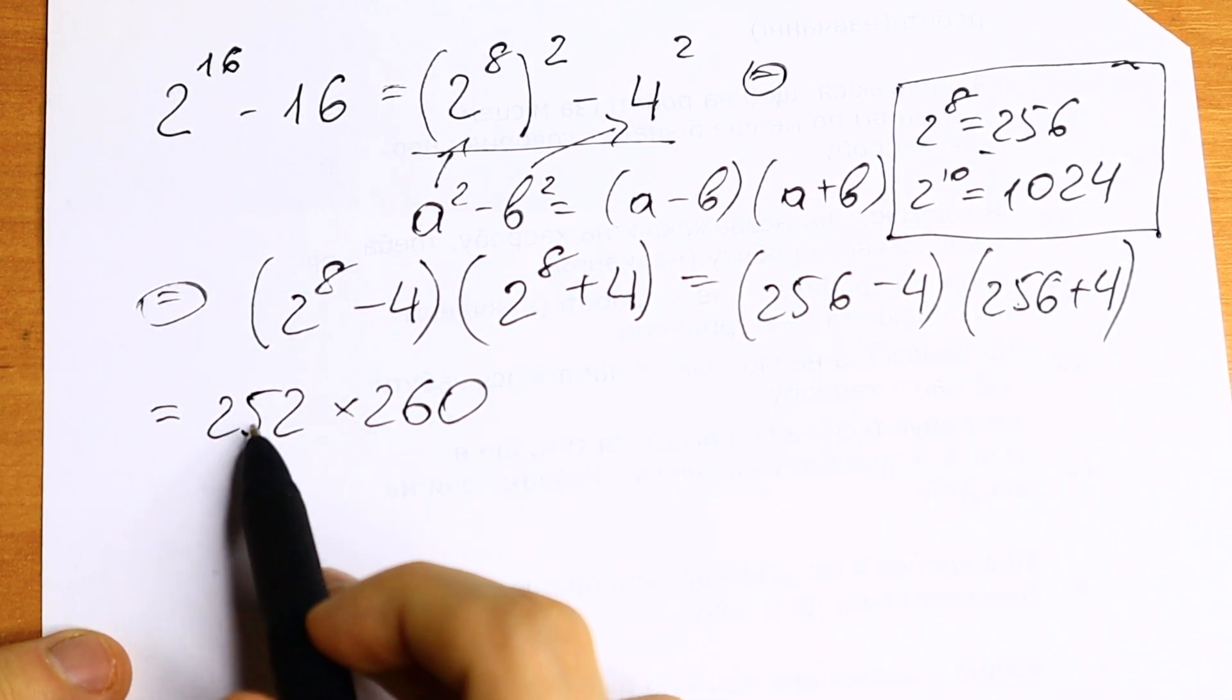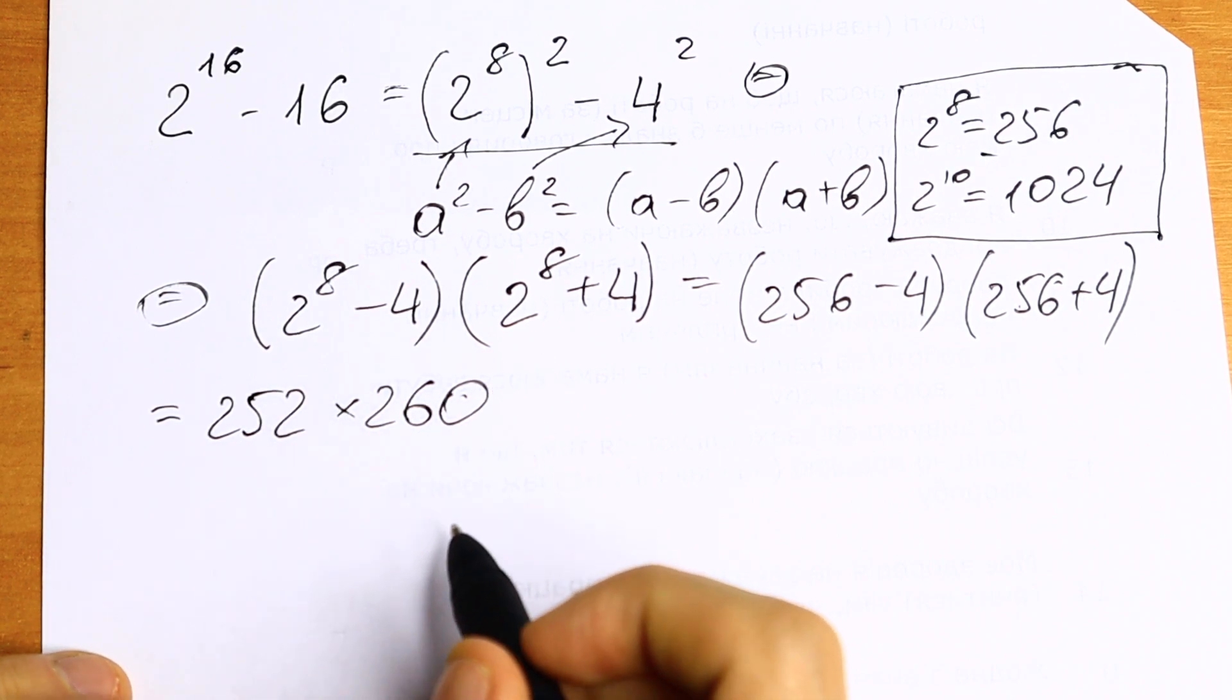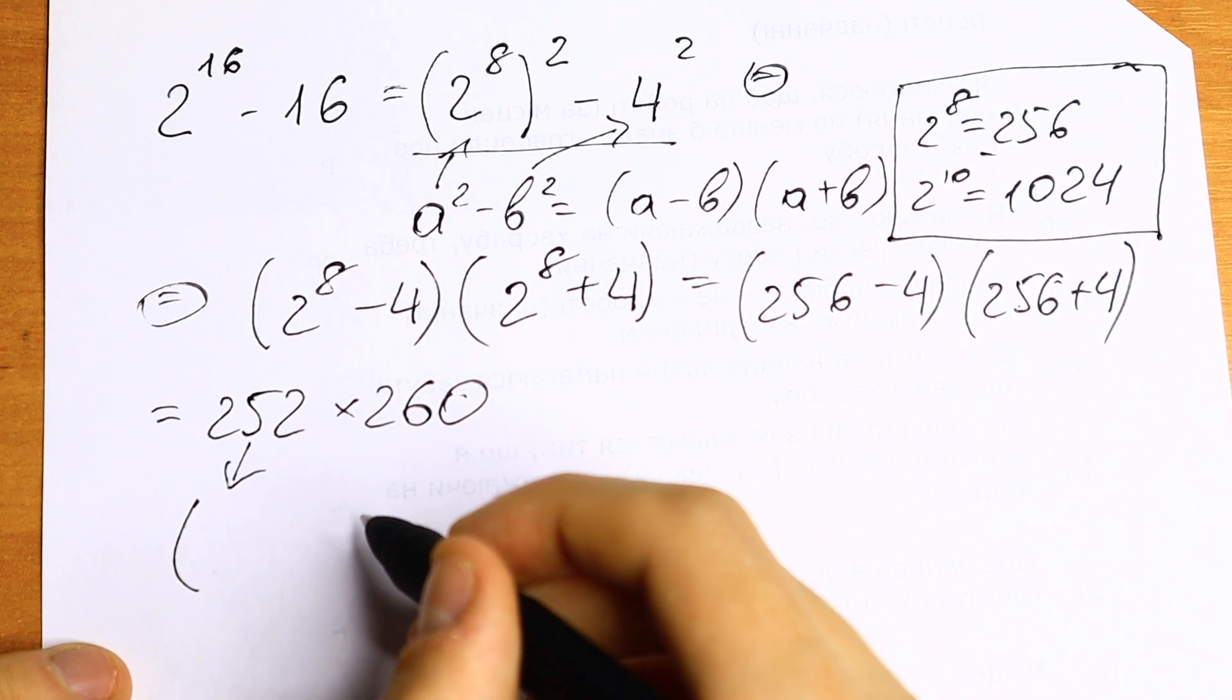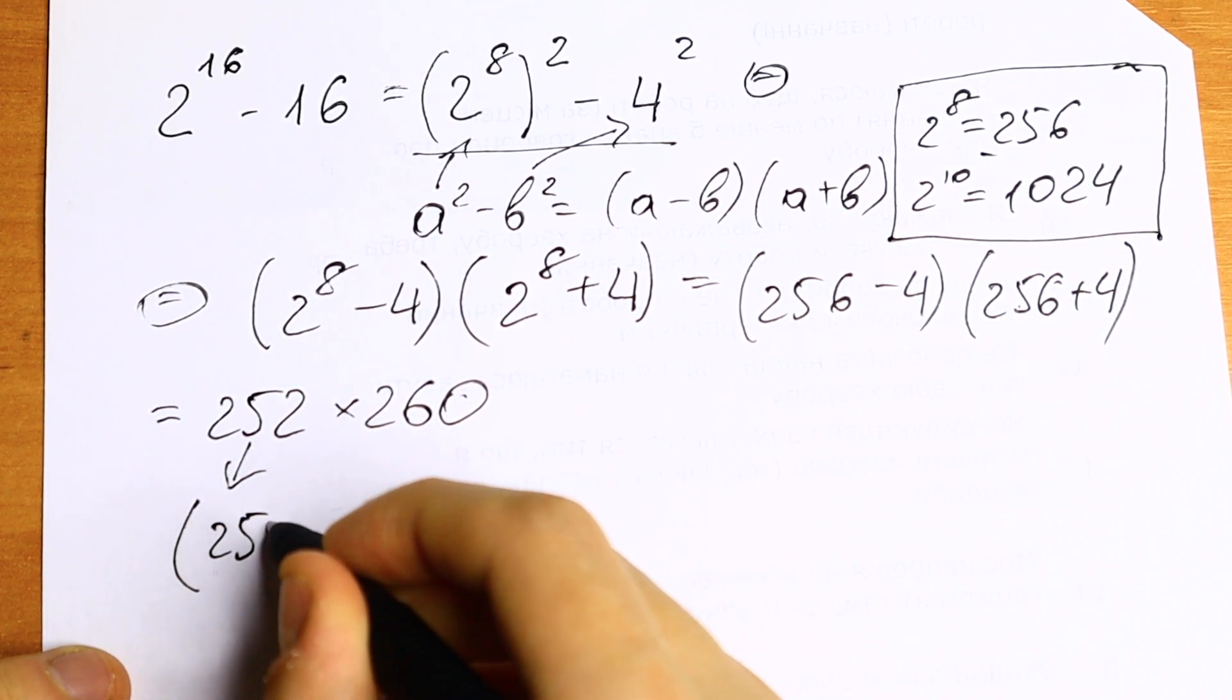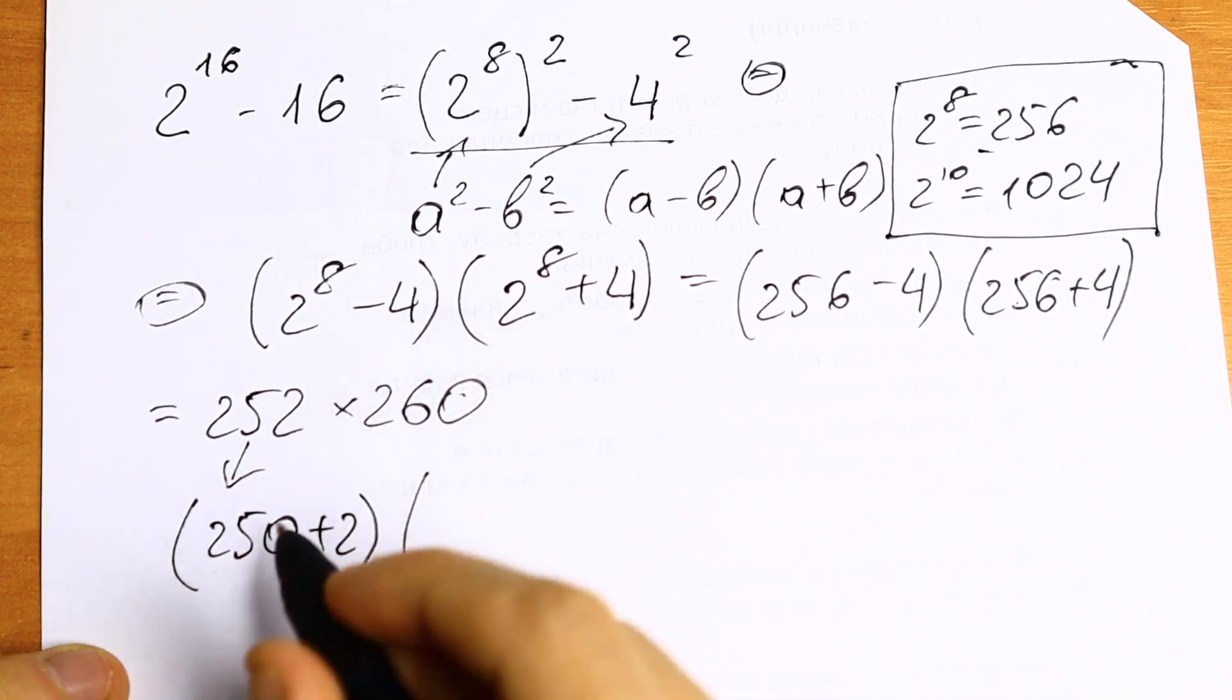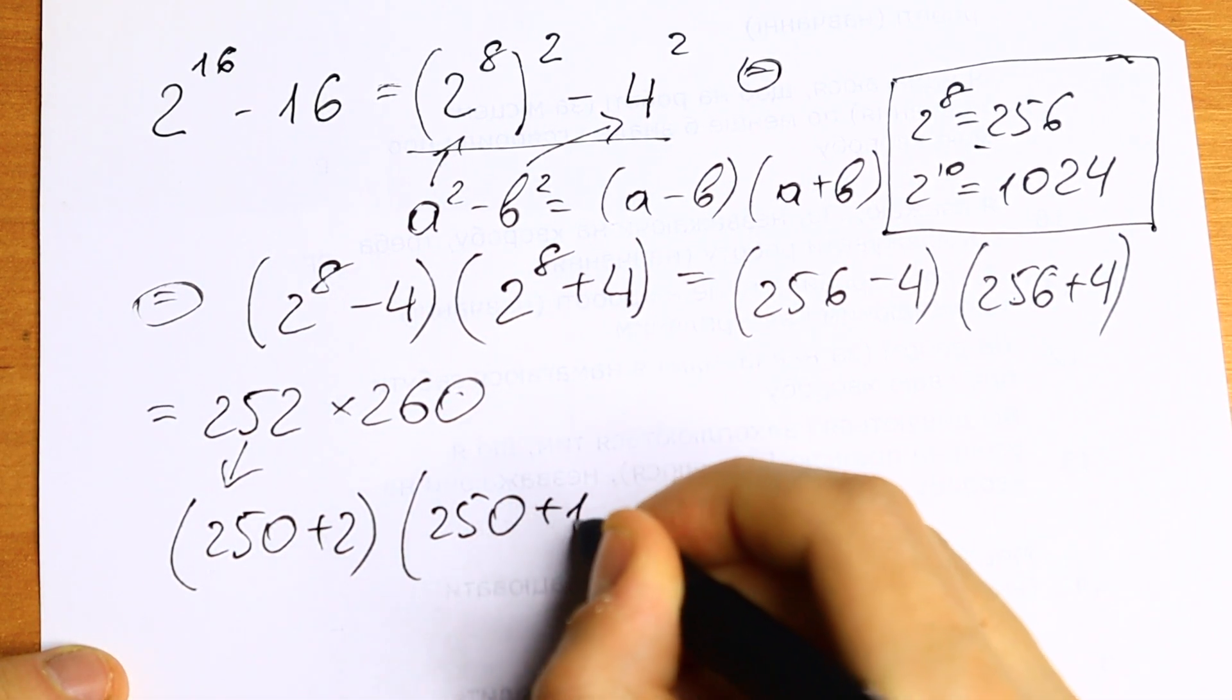The last step, we need to multiply these two numbers. How can we solve this? Let's write this 252 as 250 plus 2.